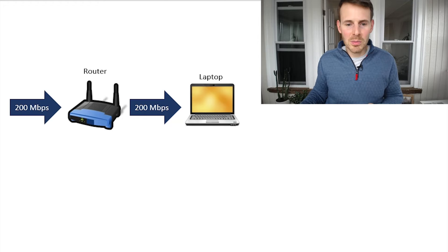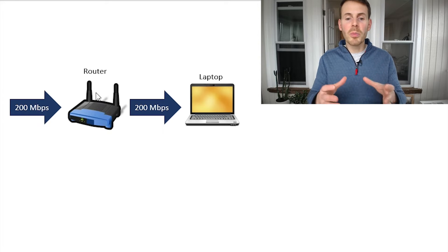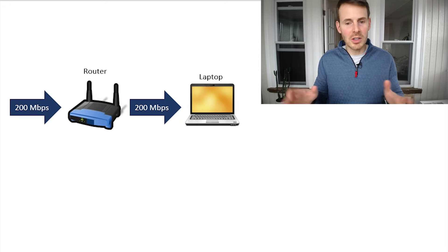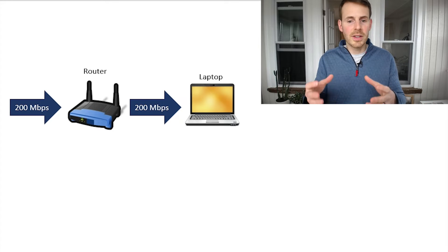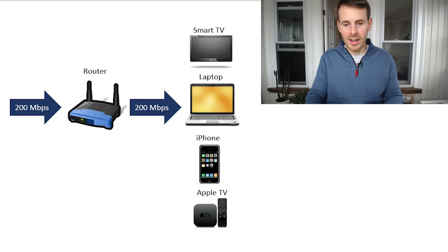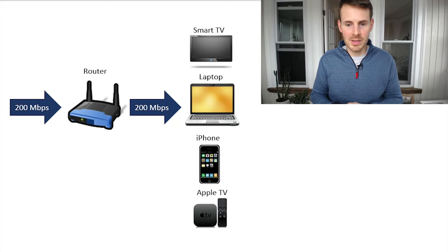Let's take a look at your home network as an example. With an internet plan of 200 megabits per second, that's what's getting delivered by your modem to your router, so your entire home network has 200 megabits per second to share. If you have one device in your home network, there are no bandwidth issues and no congestion. But as you add more devices, this 200 megabits per second of bandwidth may not be enough, and all these devices are fighting over this bandwidth in order to get an internet connection.